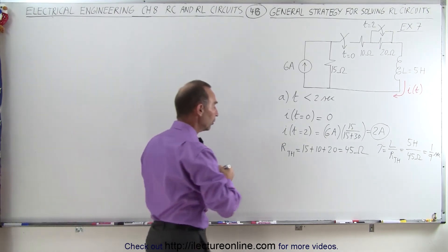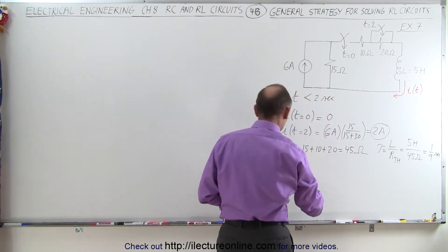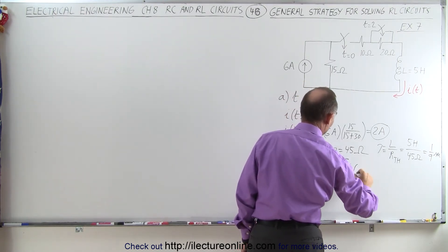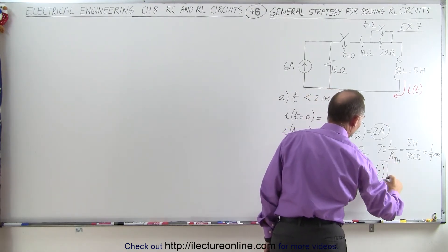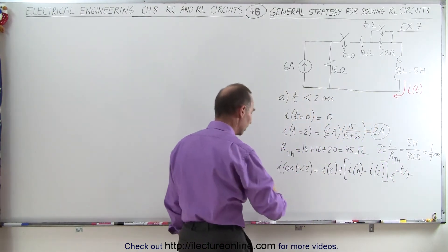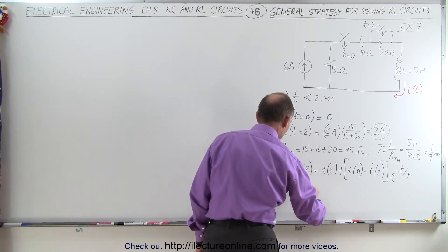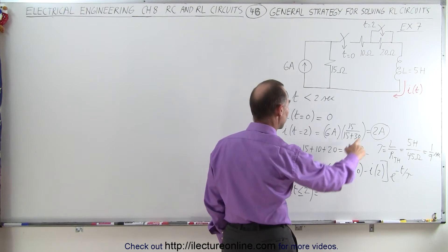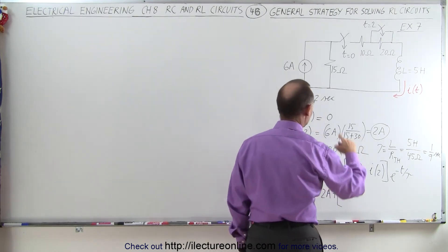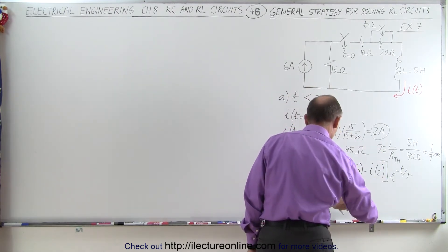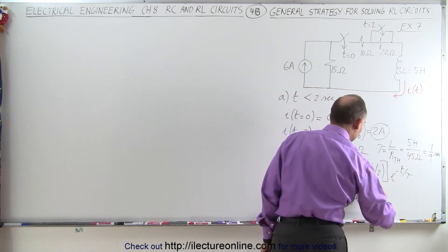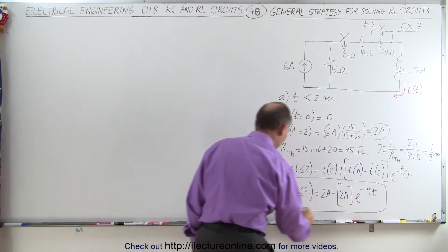If we now want to express the current through the inductor from zero to two seconds, we can say that i(t) for zero less than T less than two seconds equals the current at two seconds plus the current at zero seconds minus the current at two seconds, multiplied times e to the minus T over tau. Plugging in the numbers: that would be 2 amps plus 0 minus 2 amps, times e to the minus nine T, since tau is one-ninth. So this would be the current through the inductor for the first two seconds of the circuit.